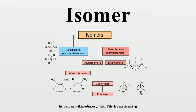Note that, although conformers can be referred to as stereoisomers, they are not stable isomers, since bonds in conformers can easily rotate, thus converting one conformer to another, which can be either diastereomeric or enantiomeric to the original one.